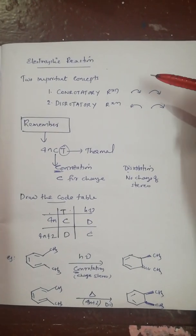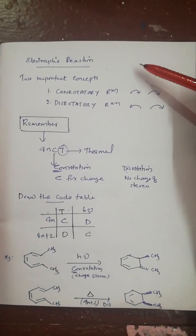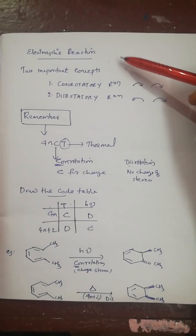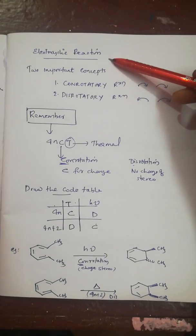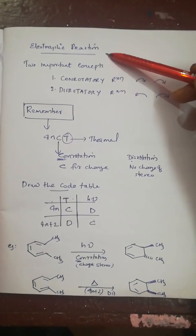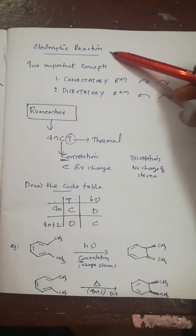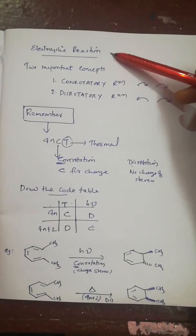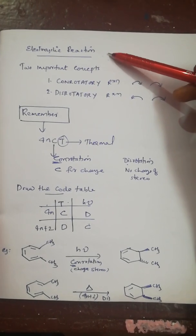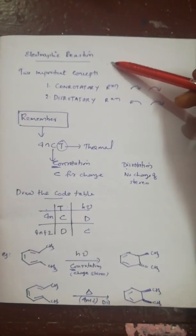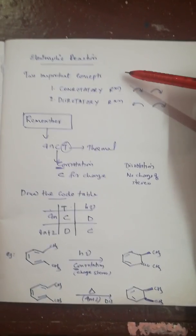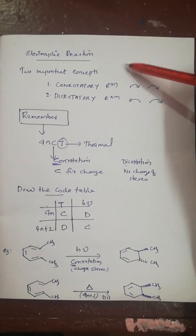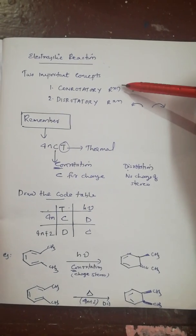Hello friends, I wanted to introduce one small concept in pericyclic chemistry: electrocyclic reactions. This reaction involves the movement of pi bonds converting to sigma bonds. In CSIR exams we get one or two questions from electrocyclic reactions and most of us get confused by the chemistry behind this, so I want to introduce a small trick to remember all these reactions.